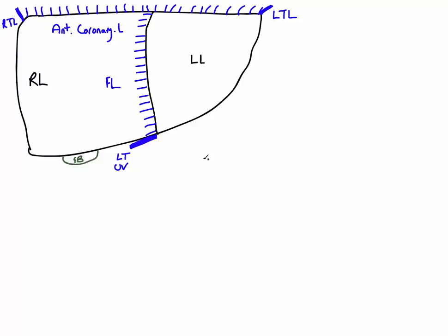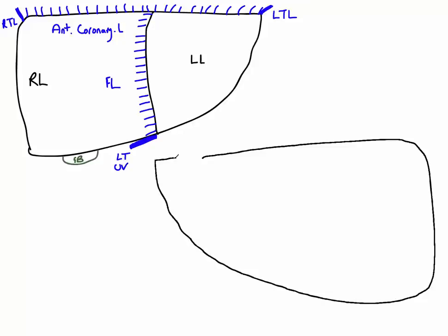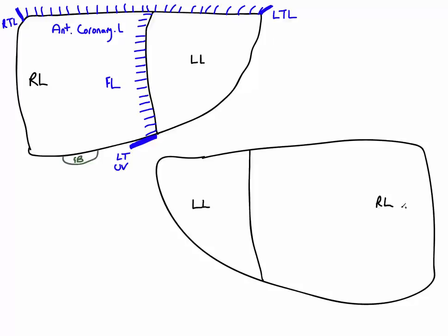Now if we turn to the visceral or posterior surface of the liver, we can see a groove separating the left lobe from the right lobe, known as the umbilical fissure. It is called the umbilical fissure because the umbilical vein ran within it during development, taking blood towards the inferior vena cava. Here we can see the inferior vena cava on this visceral surface. The umbilical vein carried oxygenated blood from the mother's placenta towards the IVC and ran alongside the liver.